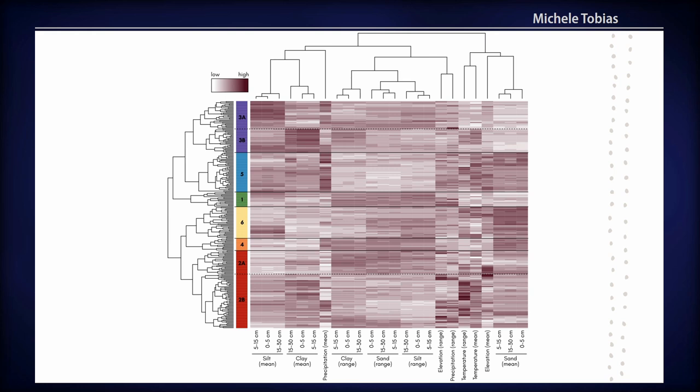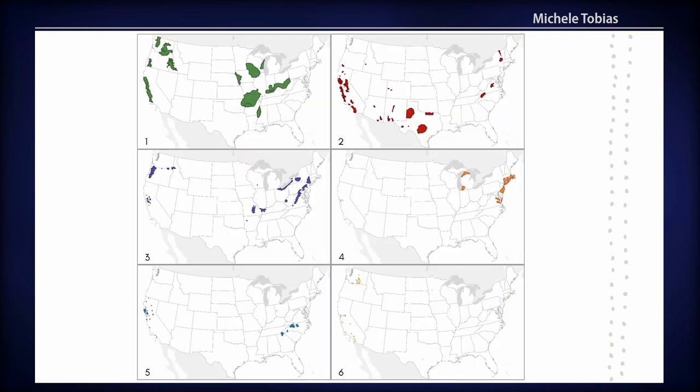You can start picking things out — like how are these clustered, why are they together? For example, group 2b seems to have temperature as a really big issue. If we look back at the map we can see that's California and Texas, which makes sense as higher temperature areas. So between all three visualizations — the dendrogram, the map, and the heat map — we can get a better idea of what's going on and why the data is structured the way it is.